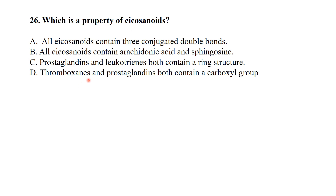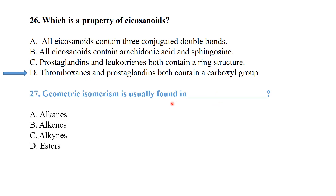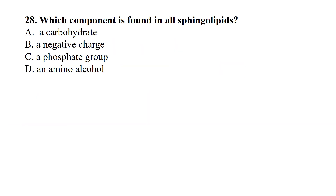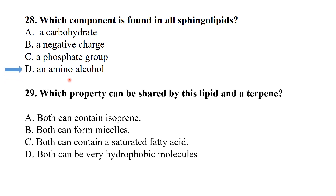Thromboxanes and prostaglandins both contain a carboxyl group. Geometric isomerism is usually found in alkenes. The component found in all sphingolipids is sphingosine — an amino alcohol. A property shared by lipids and terpenes is that they can both be very hydrophobic molecules.